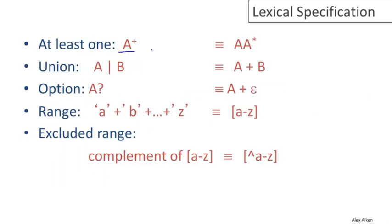One of the shorthands we talked about last time is A plus, which means a sequence of at least one A, or the language A, A star. Sometimes you'll see a vertical bar used instead of union. So A plus B can also be written a vertical bar B. An optional A is an abbreviation for the regular expression A plus epsilon.